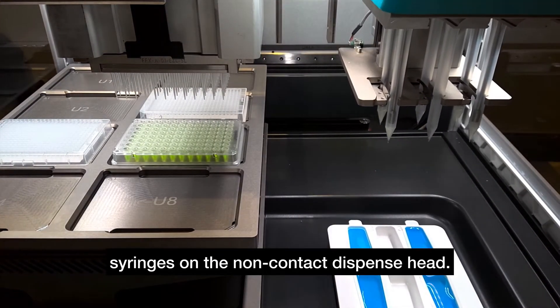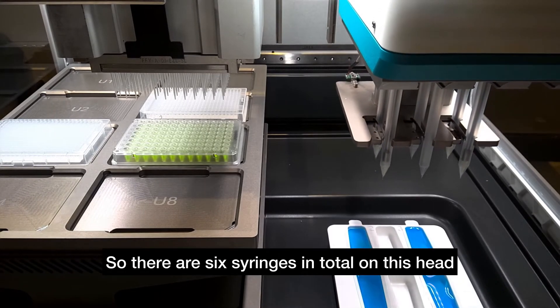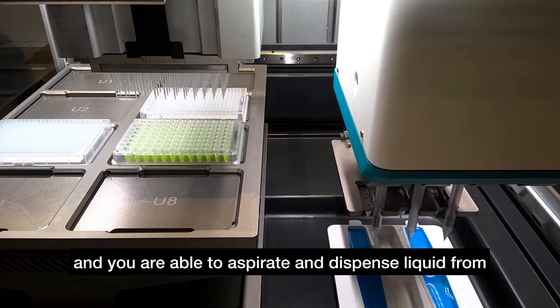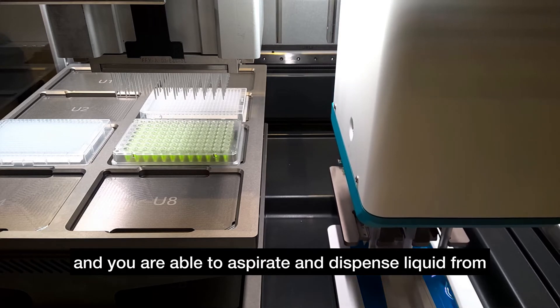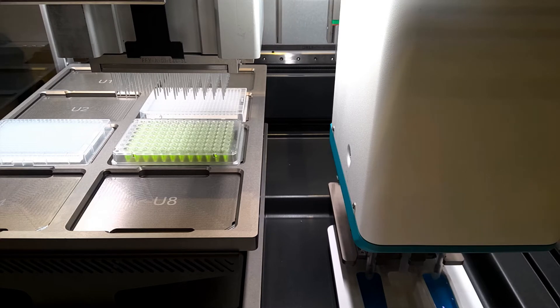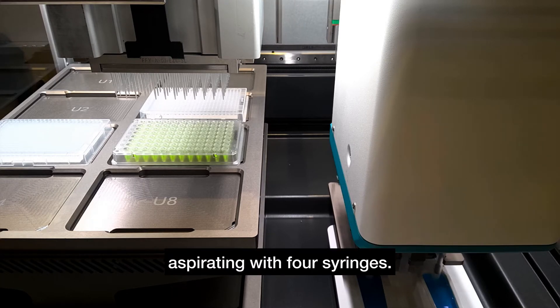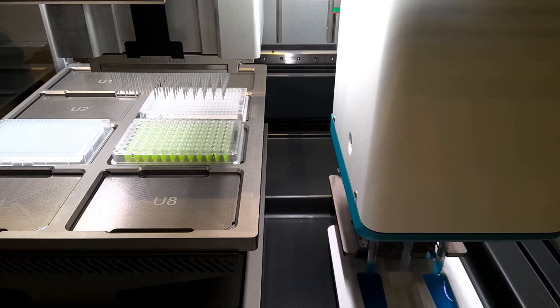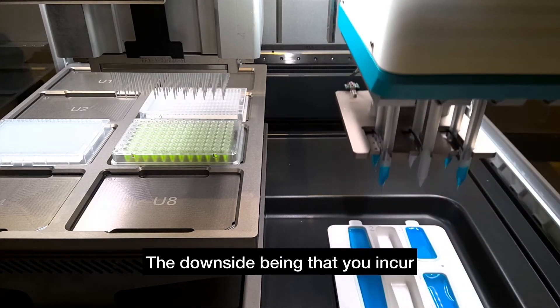There are six syringes in total on this head and you are able to aspirate and dispense liquid from any number of syringes from one to six. In this case we're aspirating with four syringes. The benefit is that you can go faster—the more syringes used for a particular liquid, the faster you can dispense. The downside is that you incur extra dead volume for each trough.